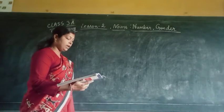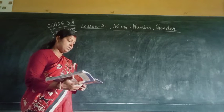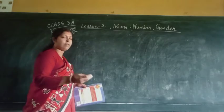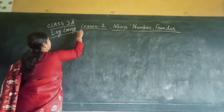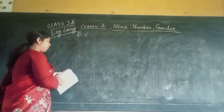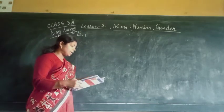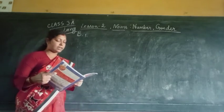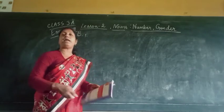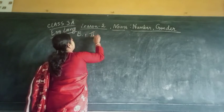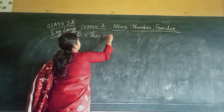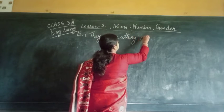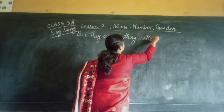Now we are going to do Exercise B: Rewrite these sentences using the plural forms of the nouns. Number 1: He is cutting a cake. We have to change it — so: They are cutting cakes.